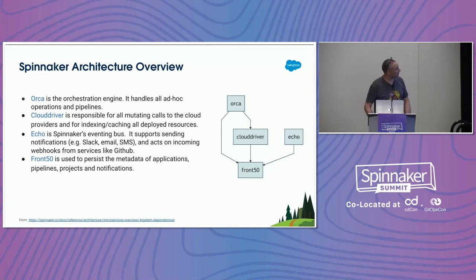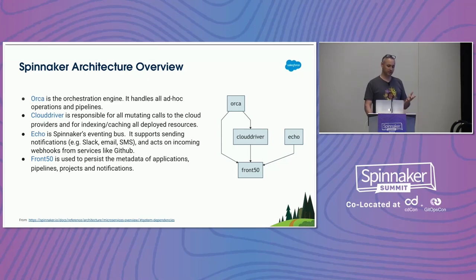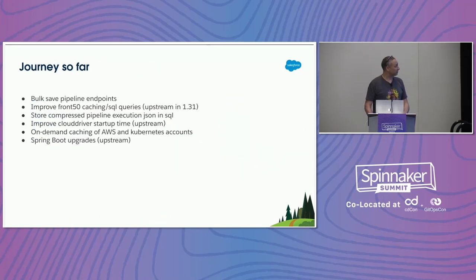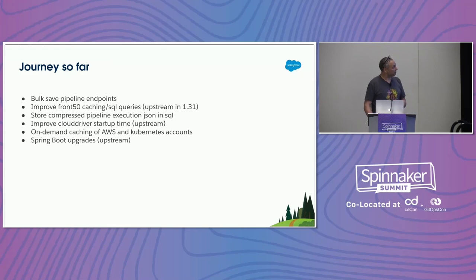One thing to note is that in addition to what it says about Echo — about sending notifications and receiving webhooks — it also can receive pub/sub information to trigger pipelines. And I want to talk about some of the things we've done to make Spinnaker work for us. These are some of the not-so-recent fixes that we made.